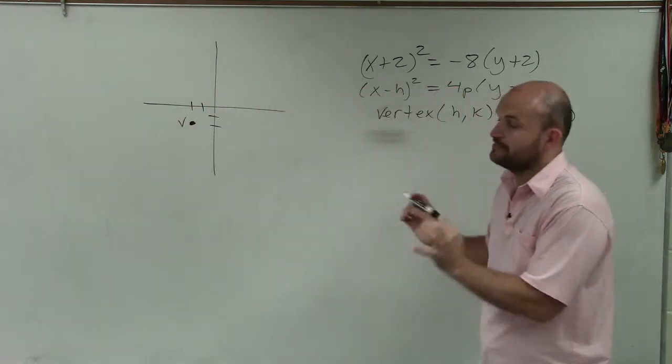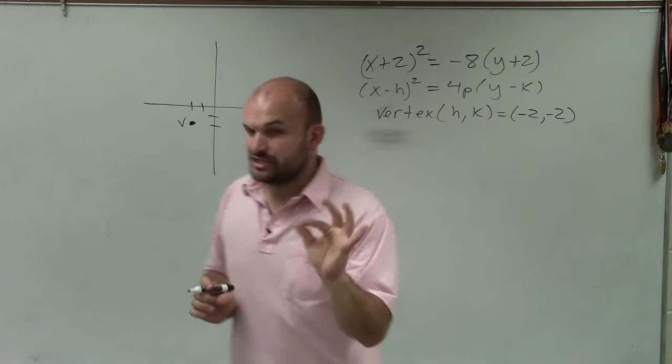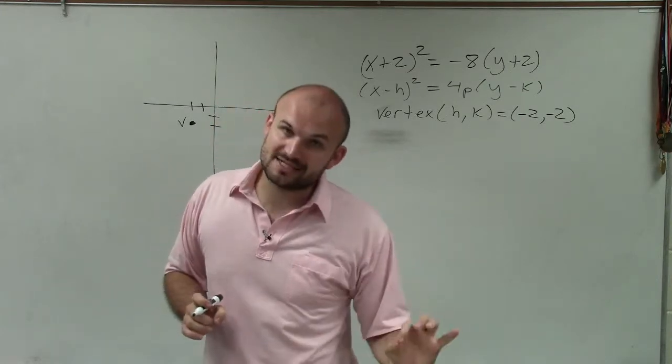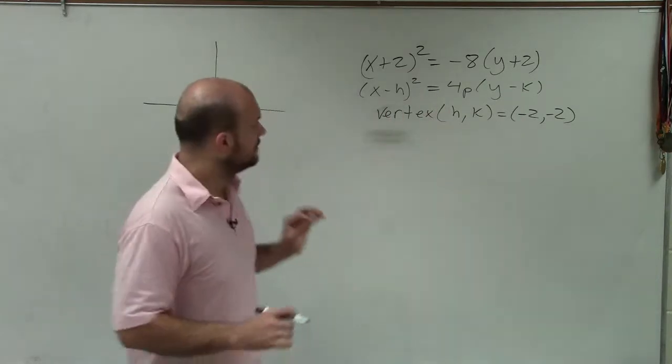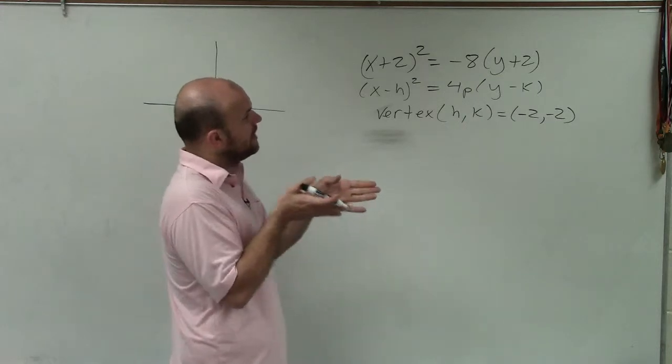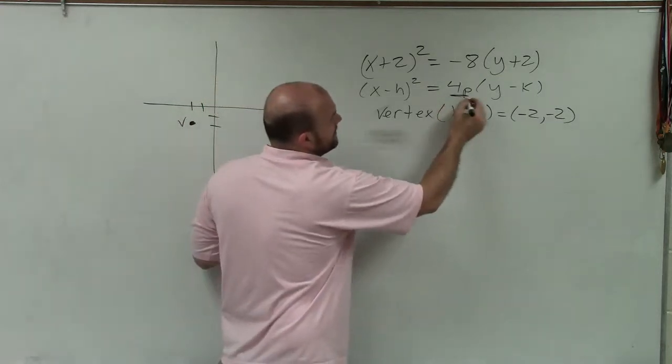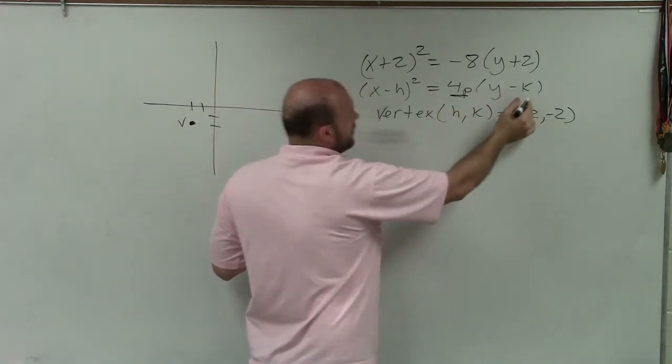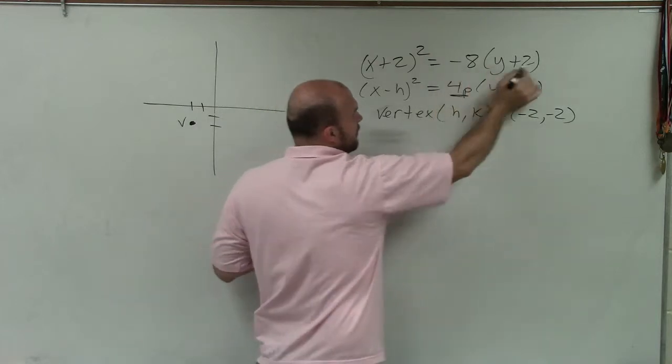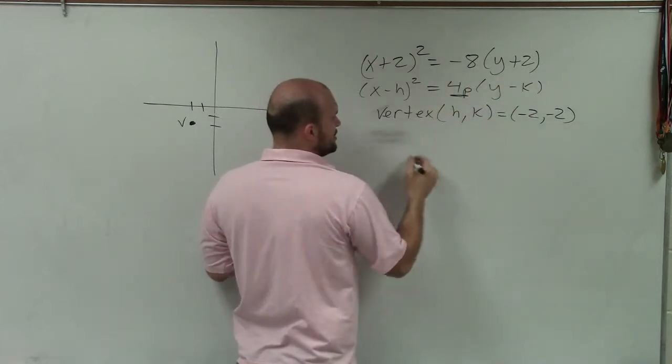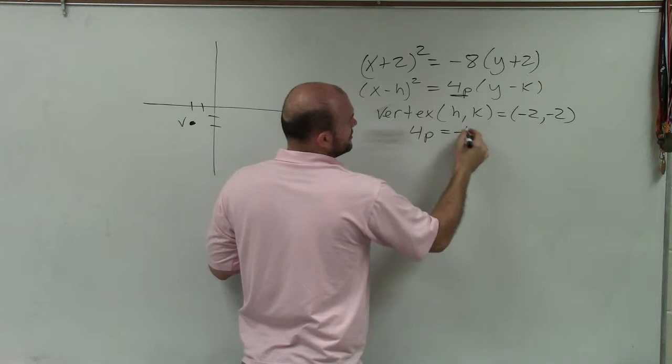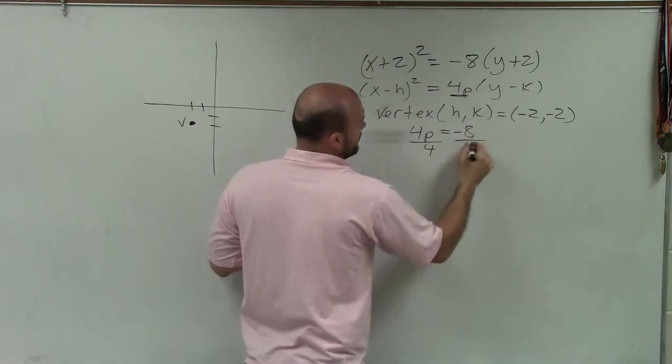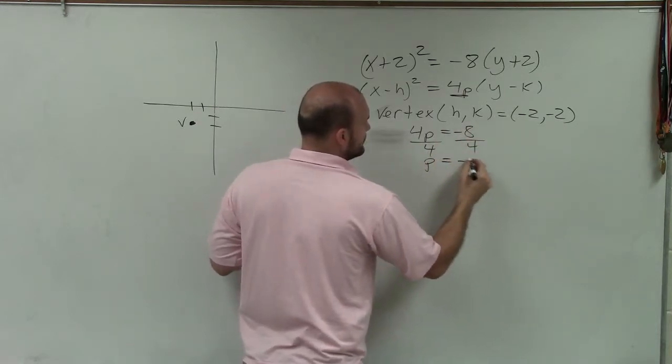And to determine that is going to be our value of p, which is going to be the distance from the vertex to our focus. So to identify p, we see that it's 4p times (y - k). Well, here I have -8 times (y + 2). So therefore, we can determine that 4p equals -8. So I divide by 4, p equals -2.